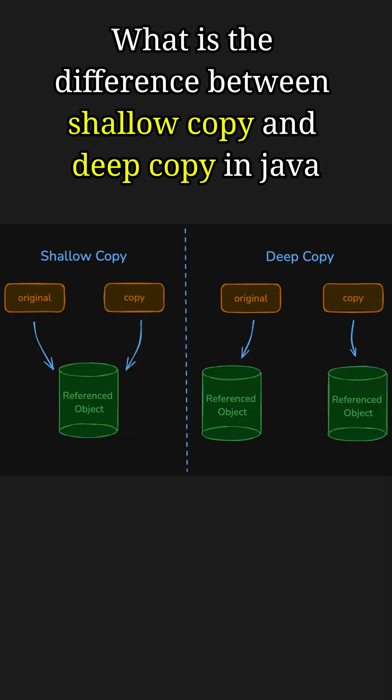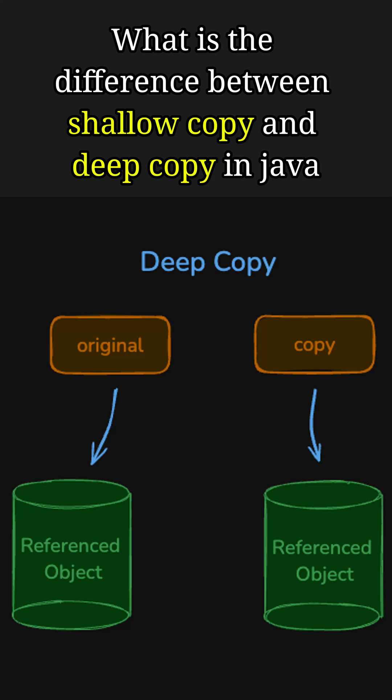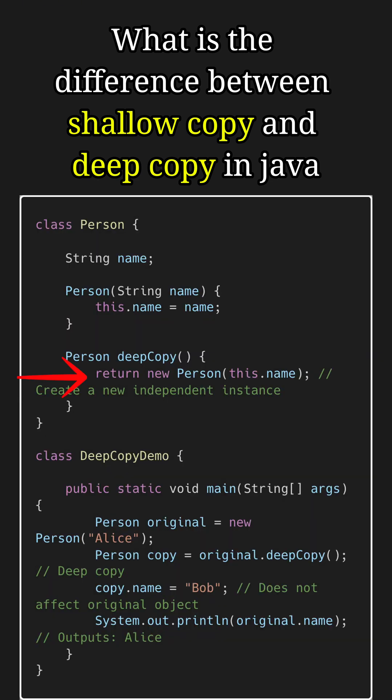And this is where deep copy can help. A deep copy creates a completely separate object and copies all fields, including sub-objects, by cloning them. This ensures that the new object is independent of the original object. For example, here inside the deep copy method, we create a deep copy of the person object by calling its constructor and passing the name reference to it. The copy object is completely independent of the original object, and hence updating the name of the copy object to Bob does not affect the original object, where the name stays Alice.